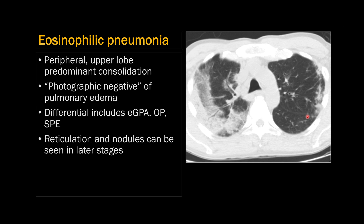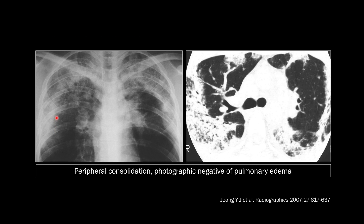E is for eosinophilic pneumonia. Specifically, chronic eosinophilic pneumonia is the one presenting as a chronic consolidation, with peripheral upper lobe predominant consolidation. It's sometimes called the photographic negative of pulmonary edema because the airspace disease is at the periphery rather than perihilar. The differential for this appearance includes eGPA (Churg-Strauss disease), organizing pneumonia, and simple pulmonary eosinophilia. You can also see reticulation and nodules in later stages of the disease.